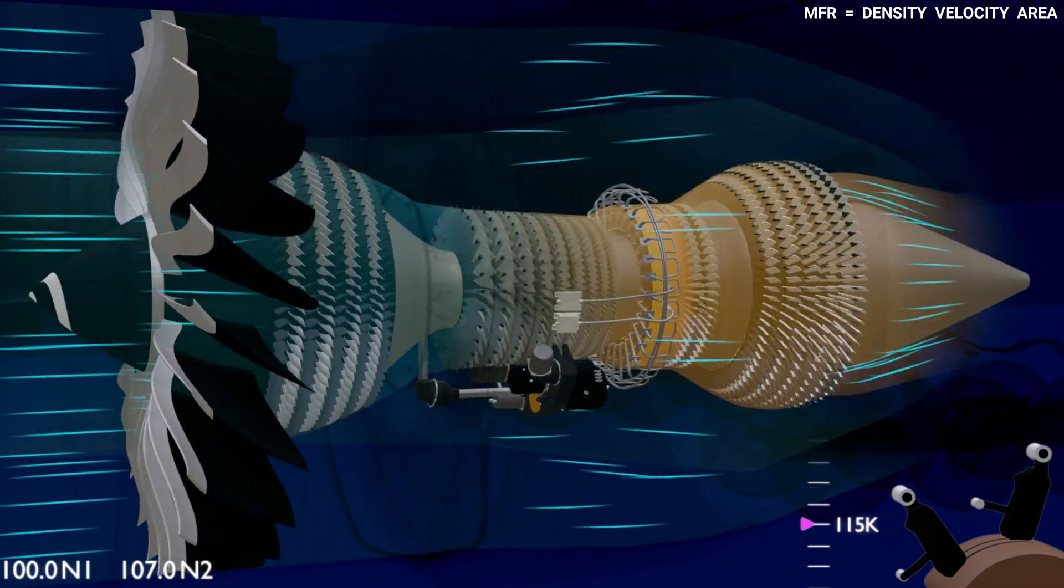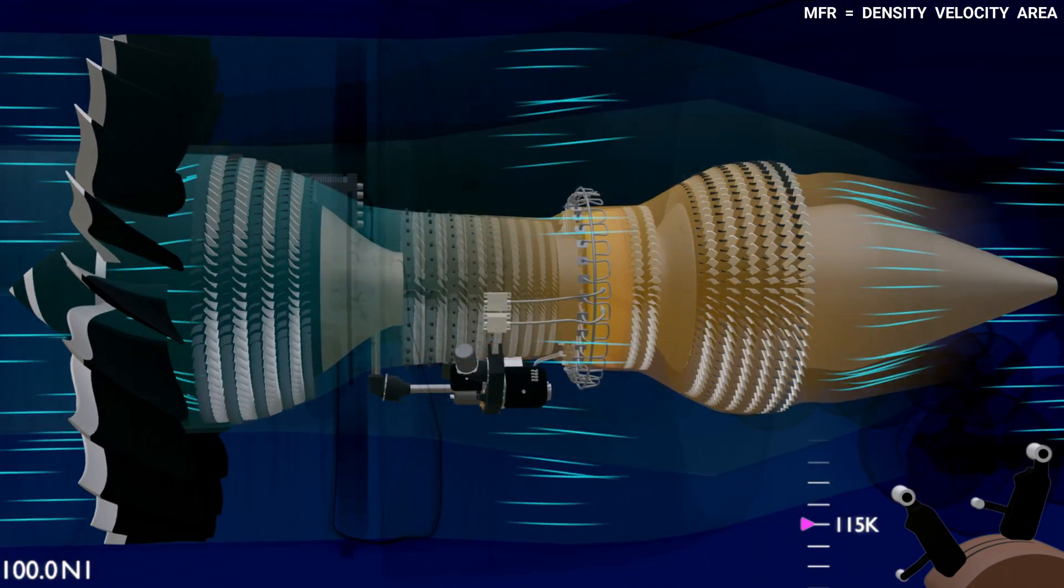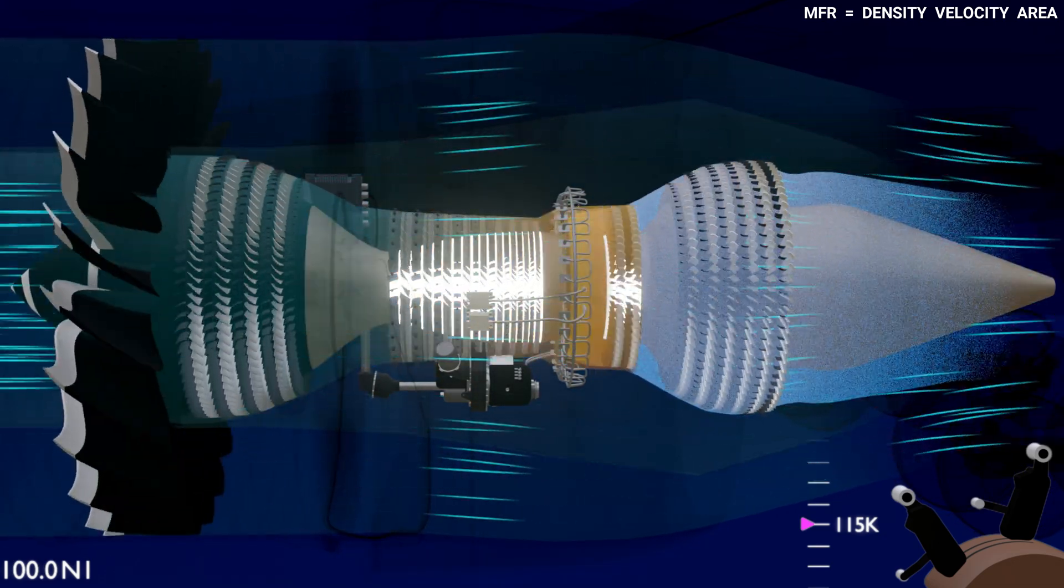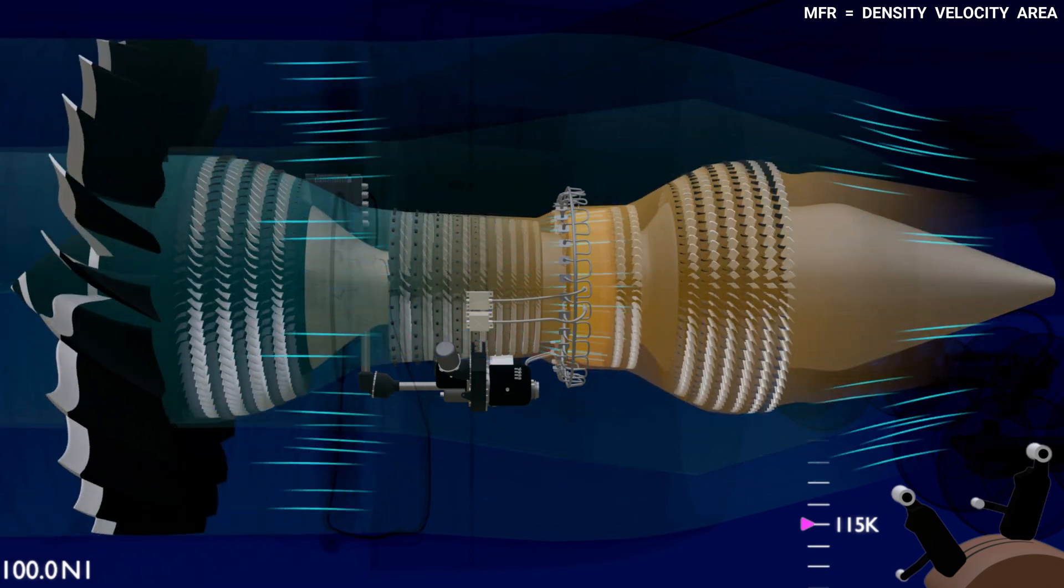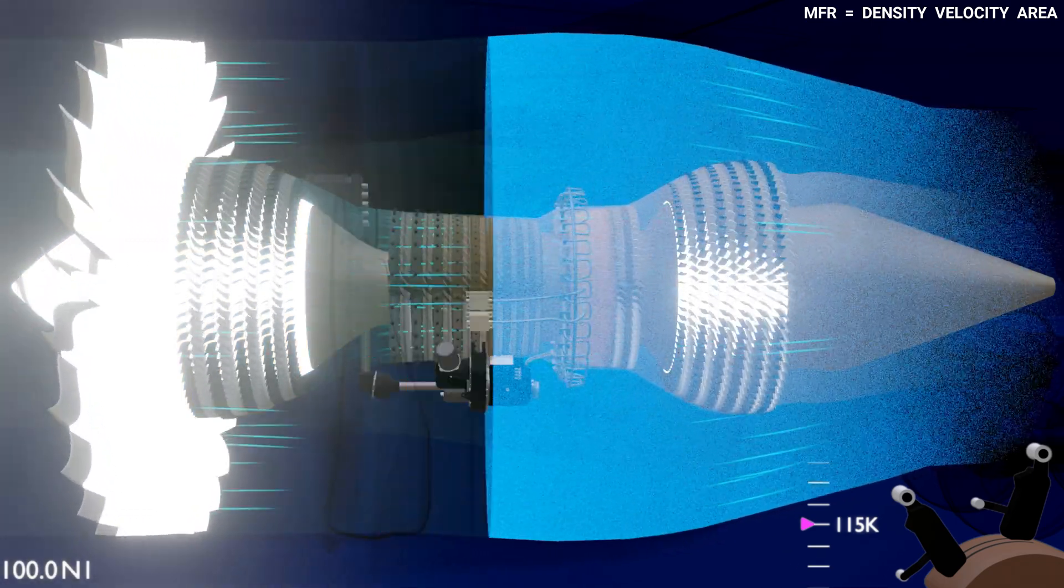The EEC controls the thrust produced by the engine by controlling the N1 shaft speed and does not use the N2 shaft to control the engine thrust, as the N2 shaft only deals with the core airflow that contributes a small part of the engine thrust. Whereas controlling the N1 shaft gives control over both the core and the bypass airflow, that is the full engine thrust.